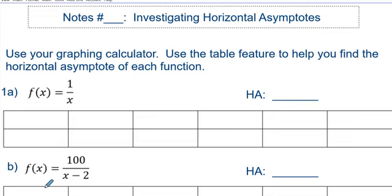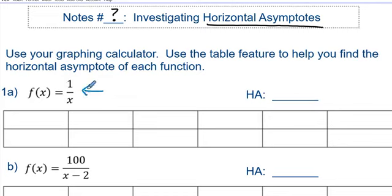So we have notes number something, and we're going to further investigate horizontal asymptotes. We're going to use a graphing calculator and use the table feature to help us figure out the horizontal asymptote. Notice that today we're looking at the function — not the graph — but just based on the function, we'll be able to figure out the horizontal asymptote without knowing what the graph looks like.